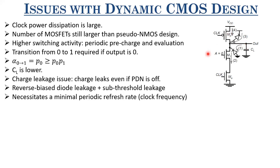There must be a minimum clock frequency such that the charge is refreshed before the output logic level is no longer read as logic high. With Vm equals VT for this circuit, if the node is initially pre-charged to VDD but due to leakage it has dropped to VT after time t, then that time t becomes the maximum clock period for refreshing, which translates to the minimum clock frequency for this dynamic circuit design.